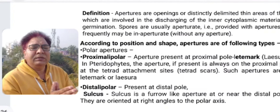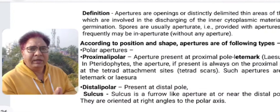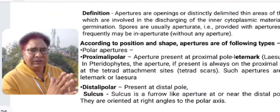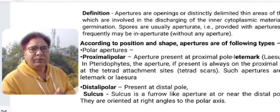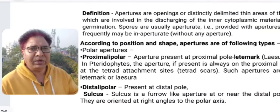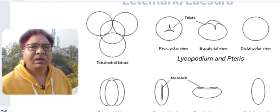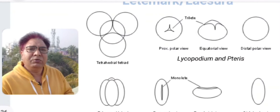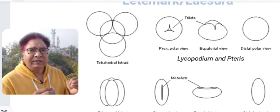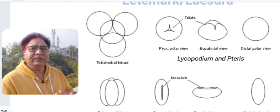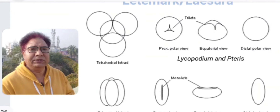As far as position is concerned, spores could be polar or non-polar. Polar spores are generally of two types because there are two poles. Apertures present on the proximal pole are called lit marks or lesura, and those on the distal pole are called sulcus. Lit marks could be monolete or trilete depending on the type of tetrad, since the proximal pole is based on the tetrad attachment site. A tetrahedral tetrad produces a triradiate aperture on the proximal pole, called trilete.